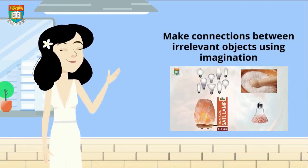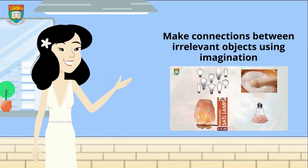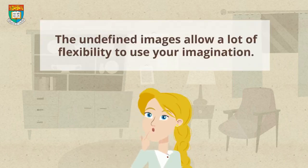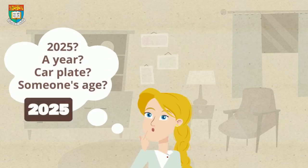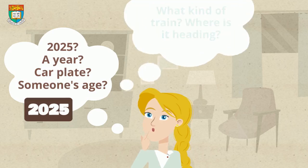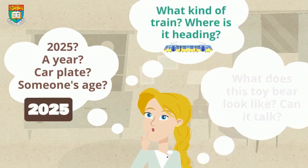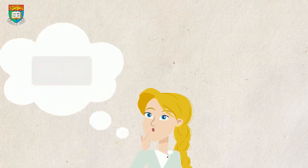Using imagination — how can we employ this activity as a perfect opportunity to train this skill? The undefined images allow a lot of flexibility to use your imagination. Is 2025 a year, a car plate, or a person's age? What kind of train would it be? Where is this train heading?